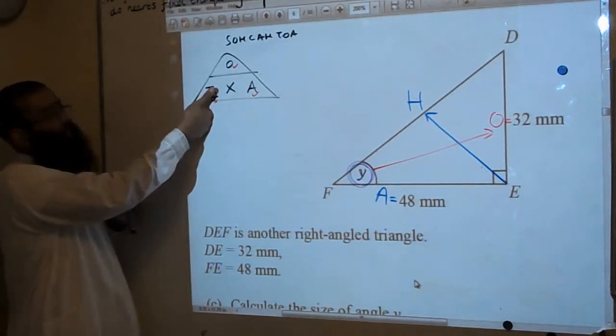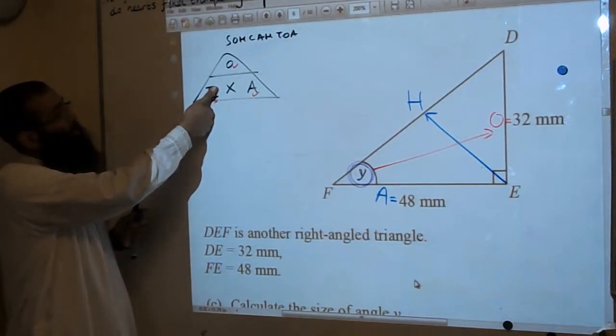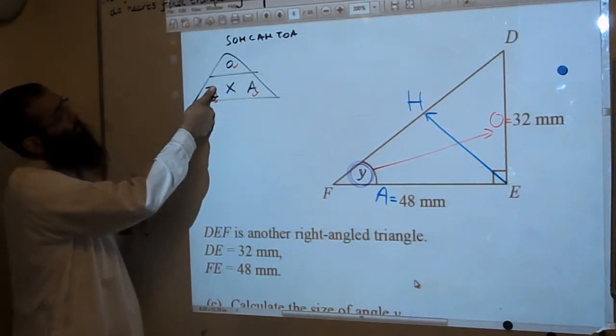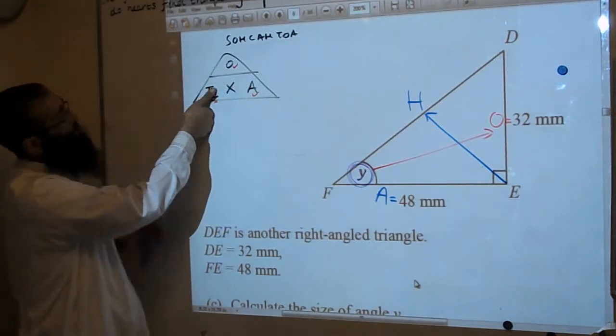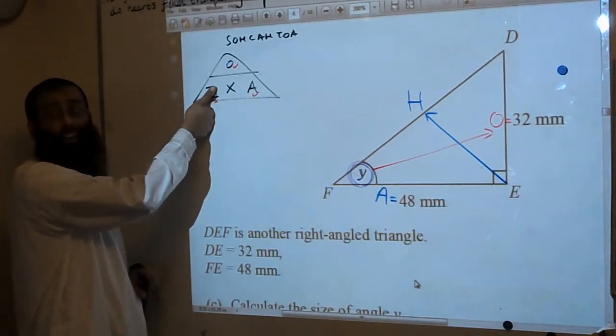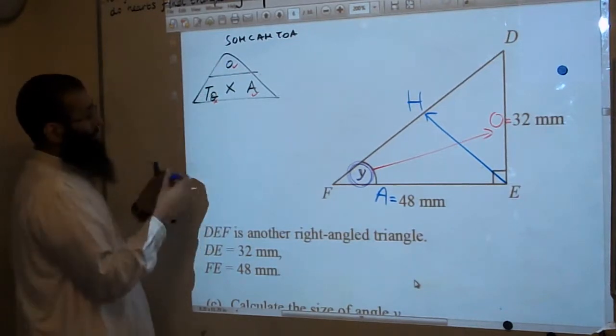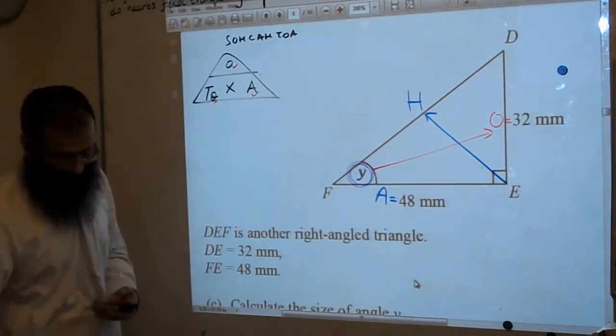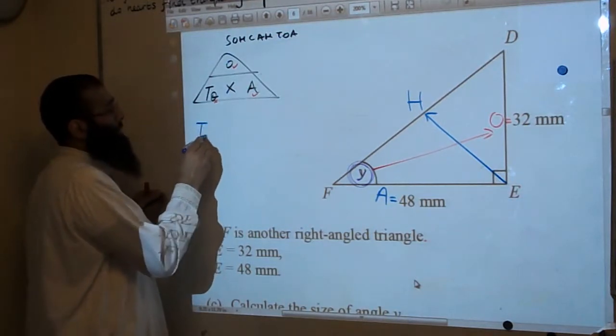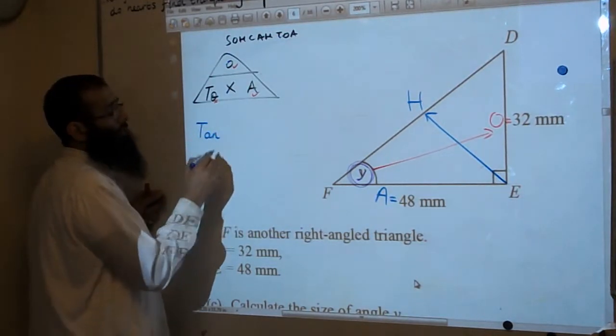I said before, we cover up what you want to work out, you cover it with your thumb. So now, as Mr. Haroon has just told us, if you cover this up, you have to do O divided by A. So that's why we use the formula triangle. You cover up with your thumb what you want to work out, and it tells you what to do. So let's write that down. So let's write down tan of the angle.